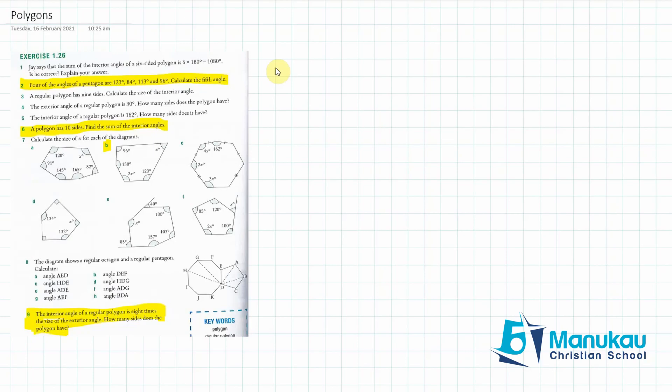So I've selected a few questions that you aren't doing in your exercise books. So the first one is two. The four angles, four of the angles of a pentagon are 123, 84, and 113, and 96. Calculate the fifth angle. Now, the first thing to remember is we know the angles of a pentagon are going to be 180 degrees multiplied by the number of sides n subtract 2.